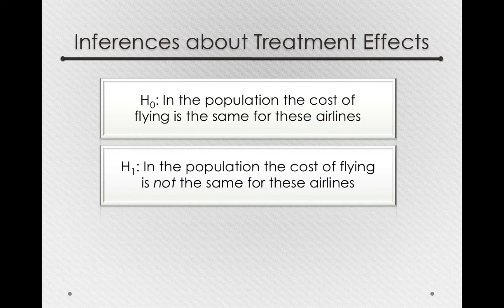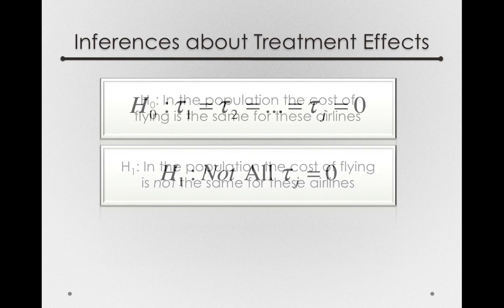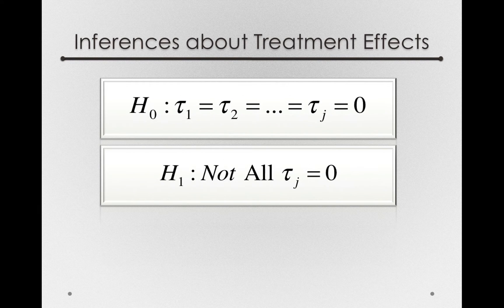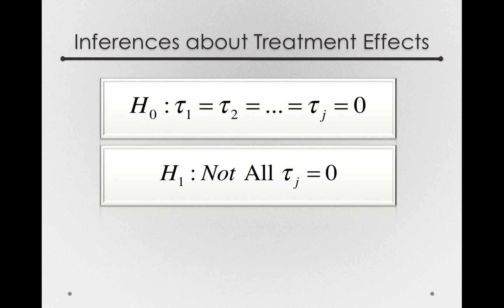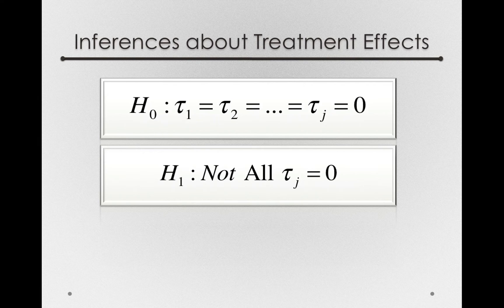So a way that we can represent these formally with our symbols is for H0, all those tau sub J's in the population are exactly 0. Notice that if that null hypothesis is true, then the grouping variable we used, our airlines, doesn't actually get used in the population to form an individual score.